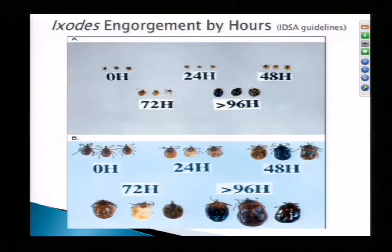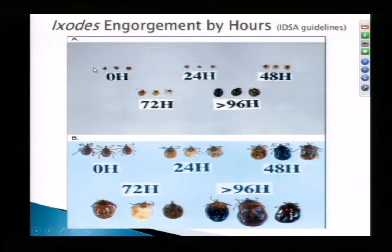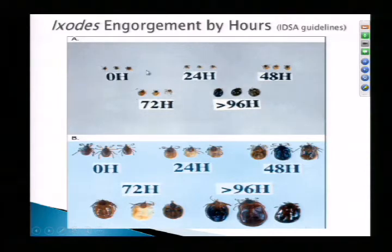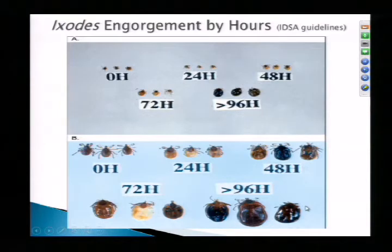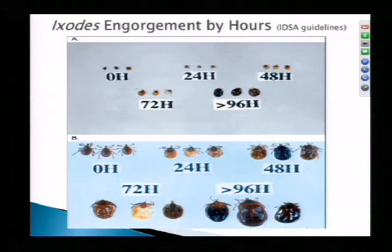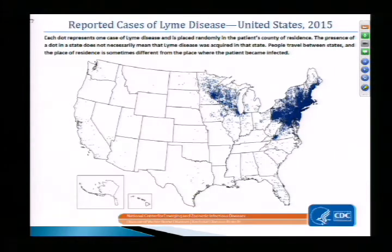This next picture demonstrates that if you have a larval form of a tick, these are remarkably small and could readily be missed by someone doing a tick check after a camping trip. After 96 hours of engorgement from a blood meal, it does significantly grow in size. With the more mature tick, there is a before and after 96-hour engorgement comparison. If patients aren't aware of a tick bite, it doesn't mean they haven't had one, especially in spring and early summer.